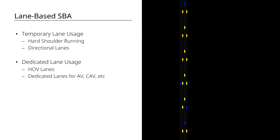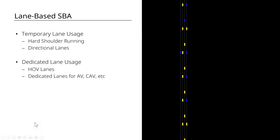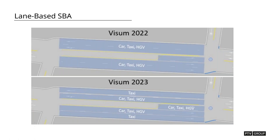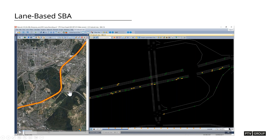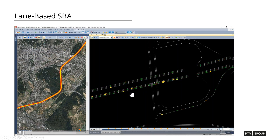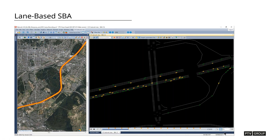This is an example showing how you designate this. In 2022 you weren't able to designate individual lane TSIs — now you are, and these can change over time as well. Looking at this roadway, initially the topmost lane has no traffic, and over time you'll see only the yellow vehicles start to utilize it. This lane-based SBA makes HOV lane modeling much easier and more streamlined.